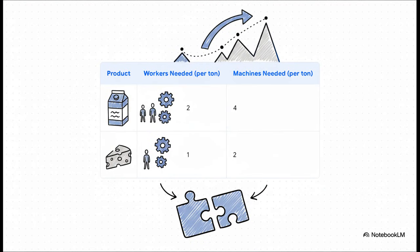So here are the production recipes, if you will. To produce one ton of milk, this economy needs two workers and four machines. For one ton of cheese, it's a little easier, just one worker and two machines. These ratios are totally fixed, and they're the foundation of this entire puzzle.